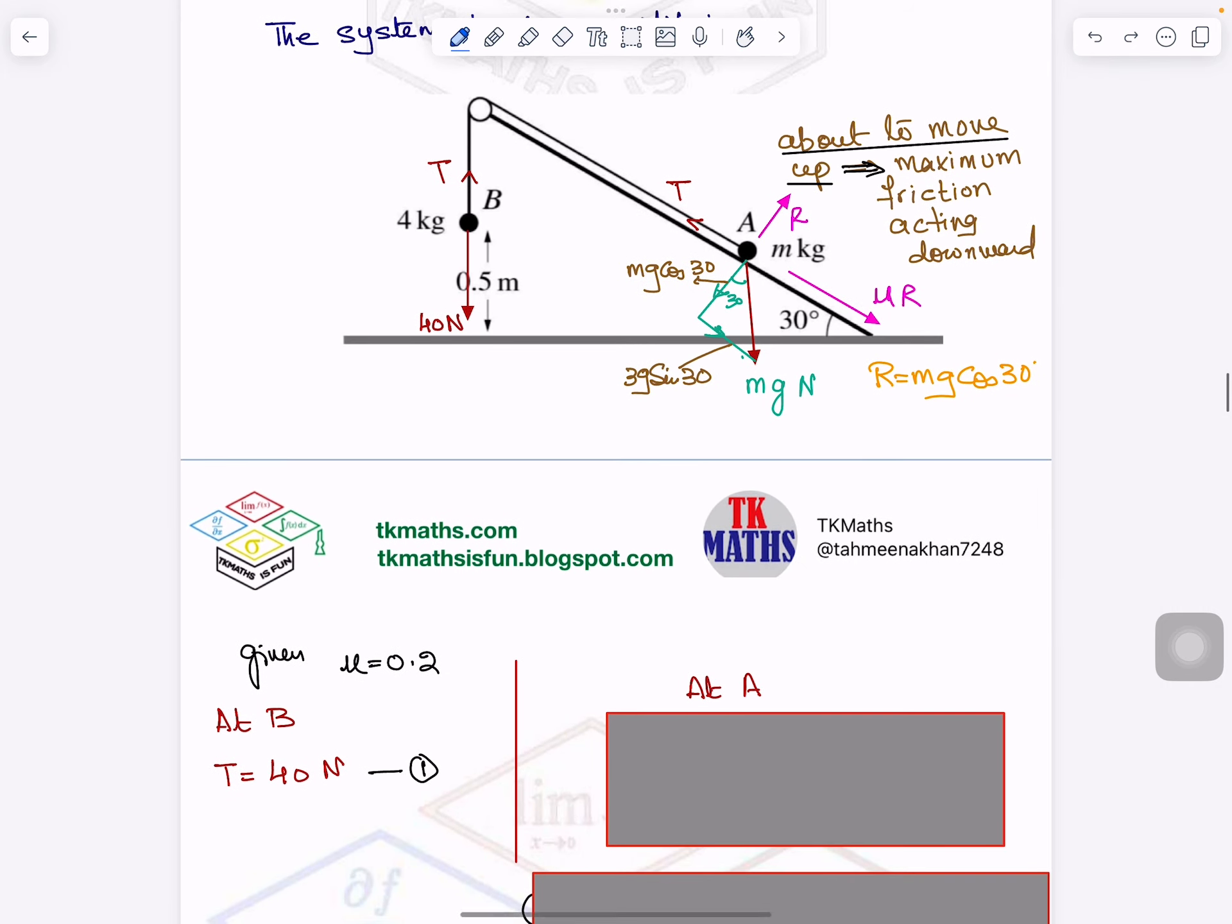I am making equation here at point B, which is the particle hanging, and because it is in equilibrium, T which is acting upward will be equals to 40 Newton, because 4 kg is the mass multiplied by g which is 10, so it is 40 Newton. Now we will see second equation which is at A.